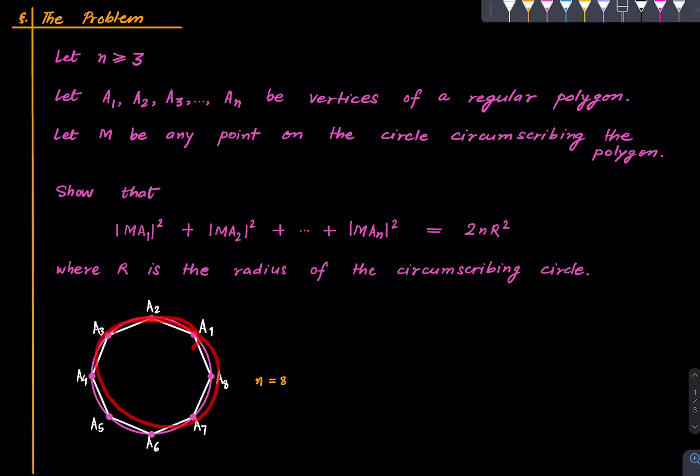This is a picture corresponding to n equals 8, so these are evenly spaced around a circle. Let M be any point on the circumference of the circle that is circumscribing the vertices, so all the vertices lie on a circle and pick M, a point on the circle arbitrarily.